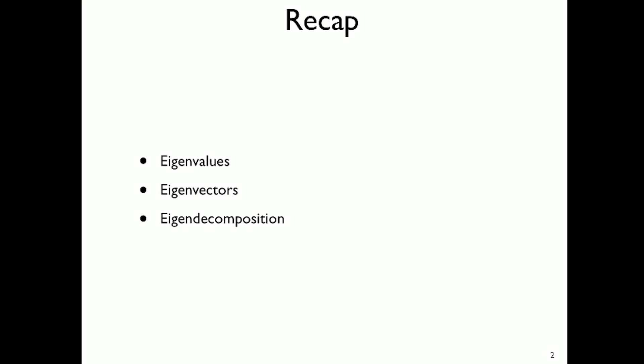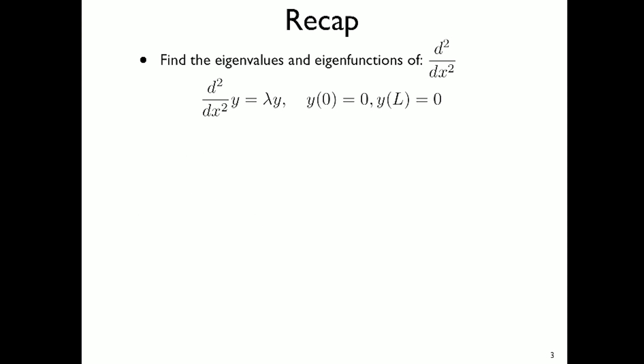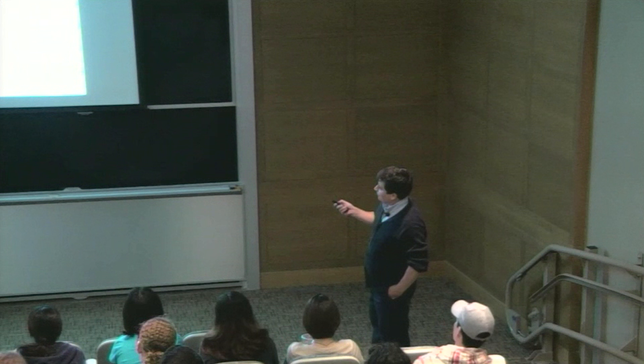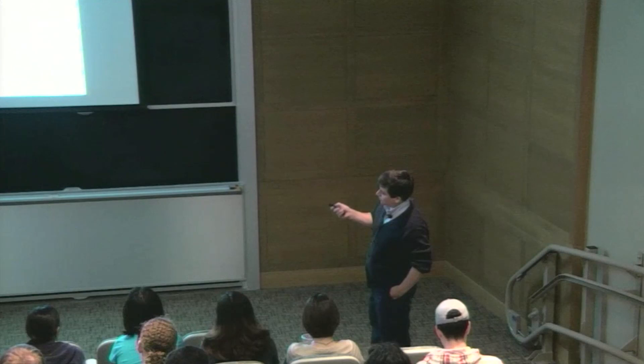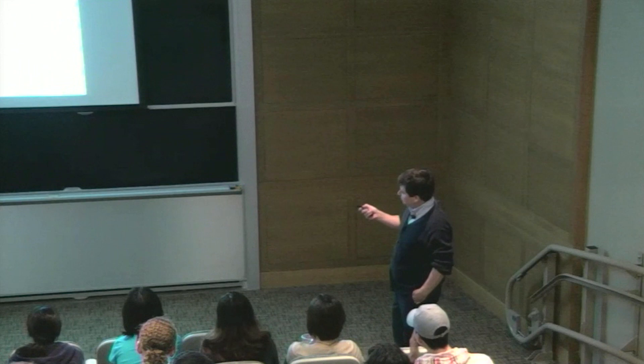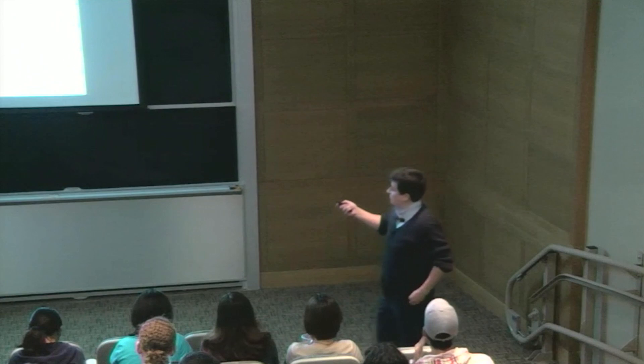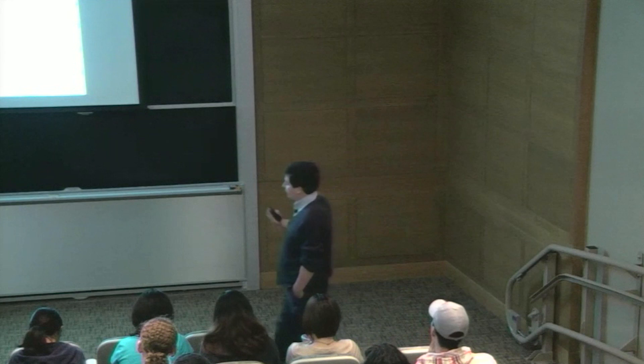I think it's always helpful to recap or look at things from a different perspective. Early on, I told you that the infinite dimensional equivalent of vectors would be something like a function — a unique map from a point x to some value f of x. There's an equivalent representation of the eigenvalue eigenvector problem in function space. We call these eigenvalues and eigenfunctions. The function is y of x, which is the equivalent of the vector.